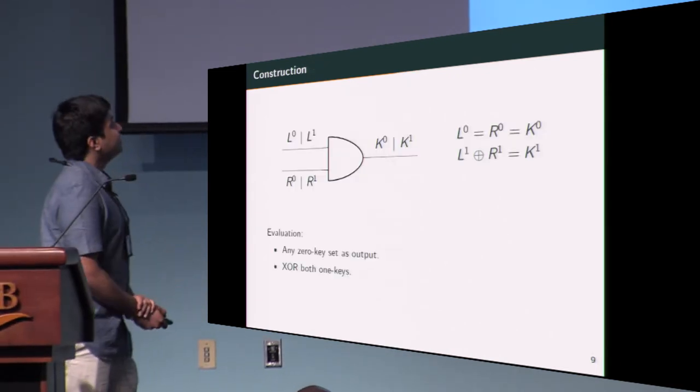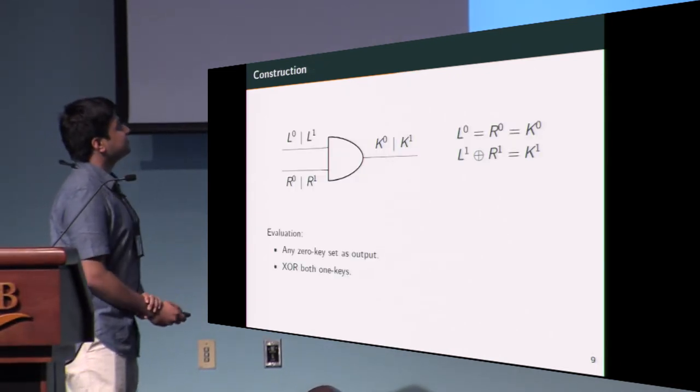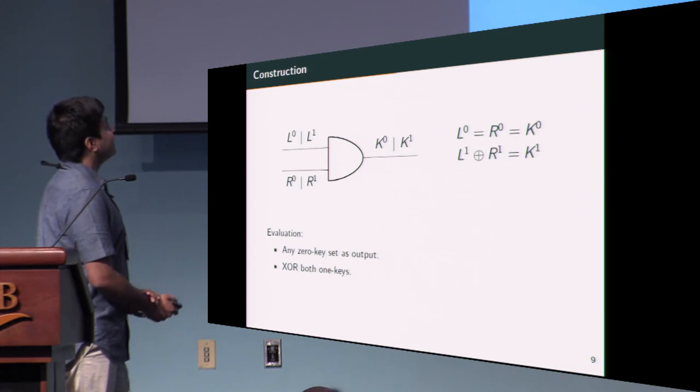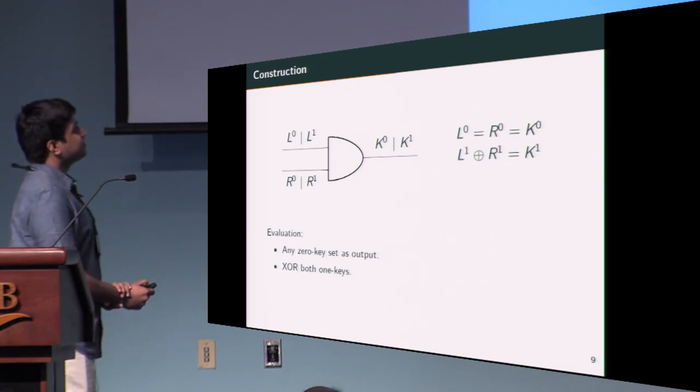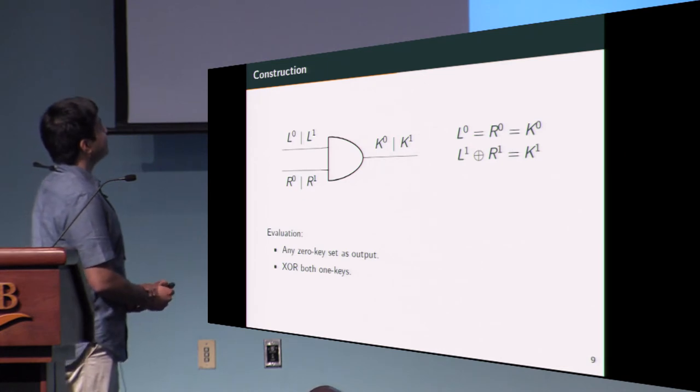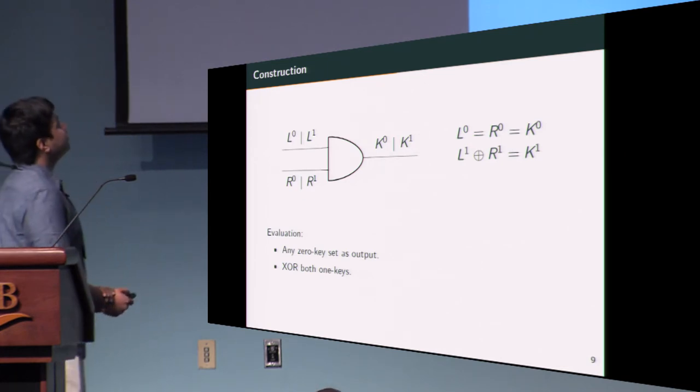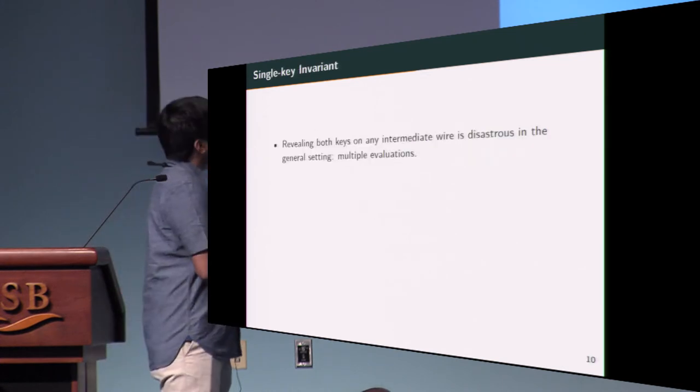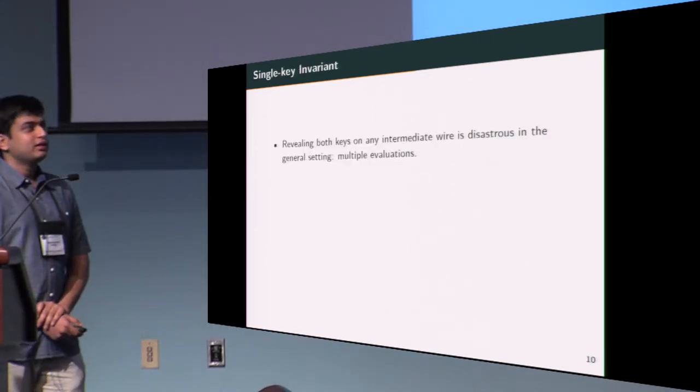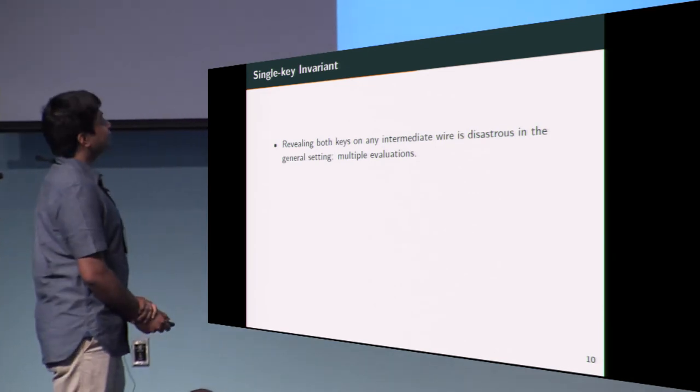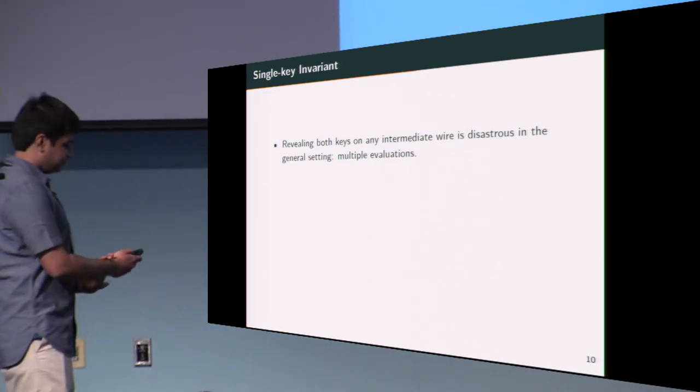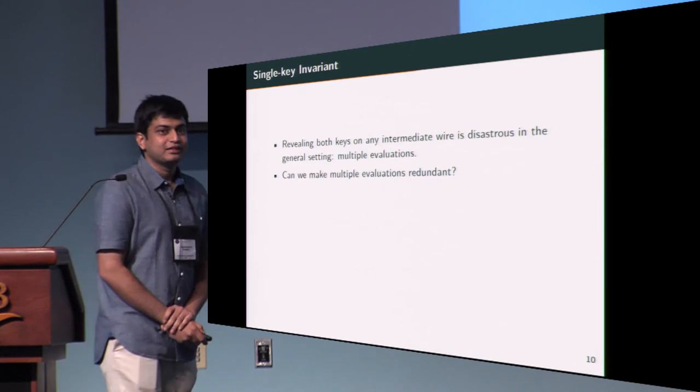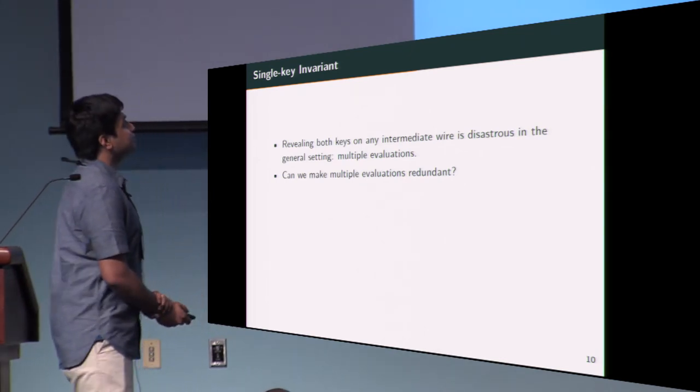An interesting aspect of this construction: consider the case where an evaluator has keys, let's say, L0 and R1. Since L0 is the same as R0 is the same as K0, he now has both keys on the right wire, as L0 is the same as R0. This could pose a problem in the general setting where he has two keys on the right wire and one key on the left wire. Multiple evaluations in the general setting are a problem as they could possibly leak the semantics of the keys that the evaluator has. But in the privacy-free setting it doesn't matter because semantics of the keys are not something that we're concerned with protecting.